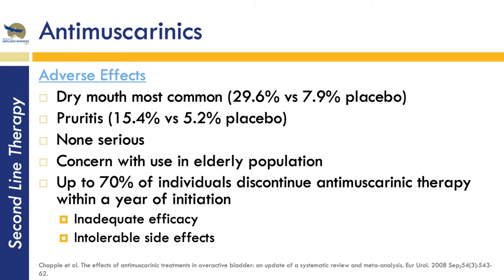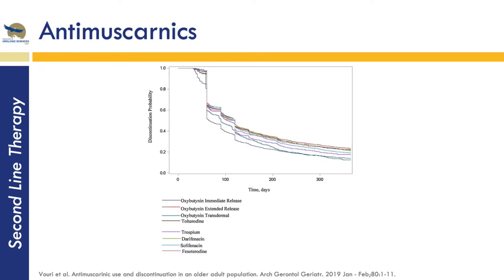Discontinuation may be due to inadequate efficacy or intolerable side effects. Pulling together different formulations of anti-muscarinics, there was a very steep drop-off in discontinuation — at approximately 90 days, almost 50% of patients had discontinued the anti-muscarinic, most likely due to side effects. Notably, people taking oxybutynin extended release were about 30% less likely compared to some other anti-muscarinics to discontinue early, compared even to oxybutynin immediate release — perhaps because the pharmacokinetics produce a similar effect on the bladder but with less dry mouth and other side effects.